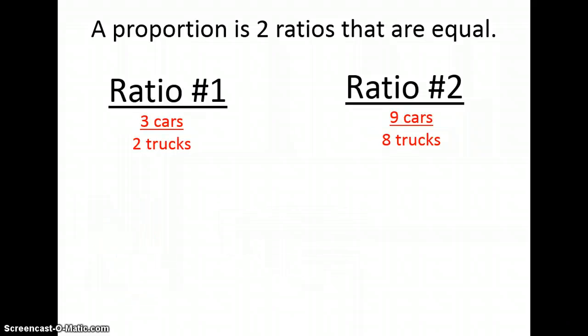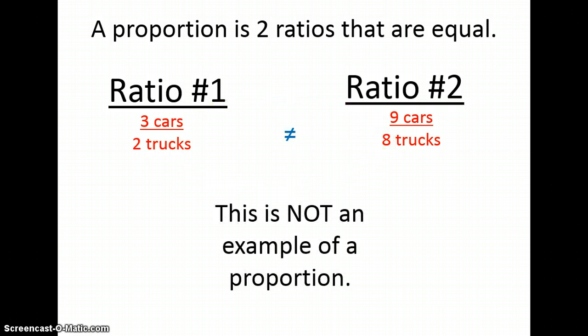Here's another example. To get from three to nine, I multiply by three. But when I multiply two by three, I don't get eight. I get six. Therefore, this is not an example of a proportion. And remember, when you have an equal sign with a line going through it, that means it's not equal. So three cars to two trucks is not equal to nine cars to eight trucks.